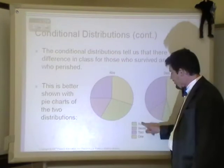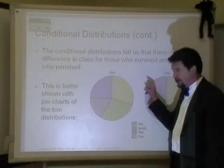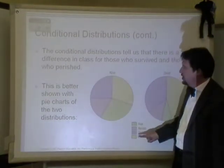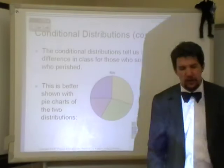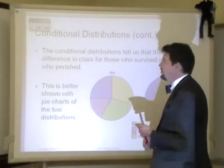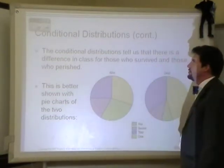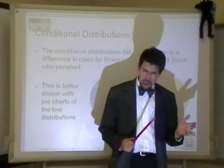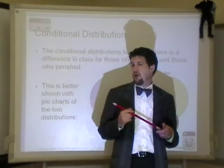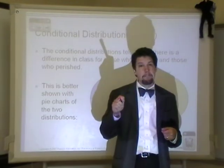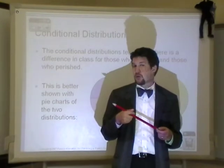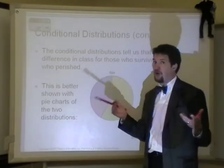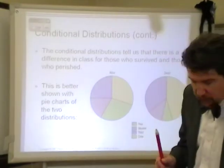It makes sense to us to say that where you are on the boat is going to influence your chances of surviving. But can I say that your class on the boat is going to cause your likelihood of surviving to increase or decrease? No, it's not. Why? Because the only way you can show that one thing causes another is through an experiment, and we haven't done an experiment. Could we do an experiment? No — we're not going to build a new Titanic and see who dies. So that's independence.